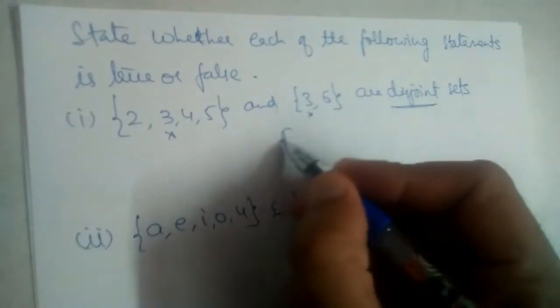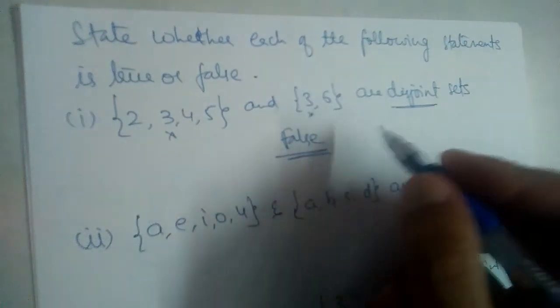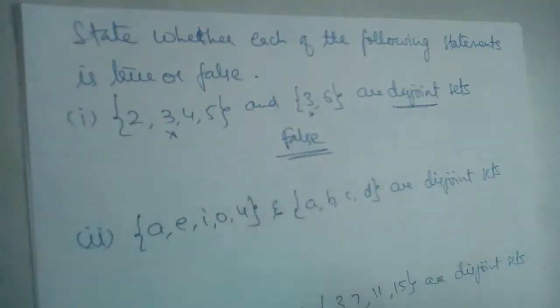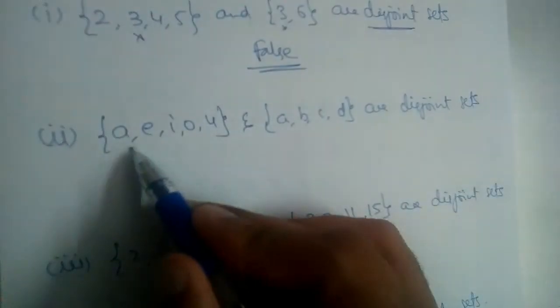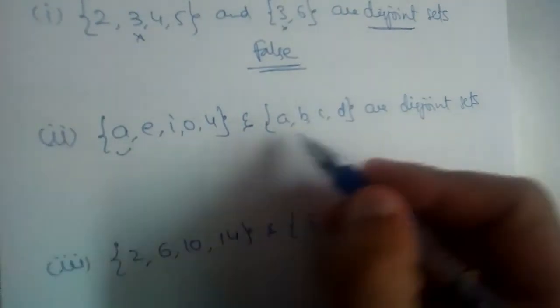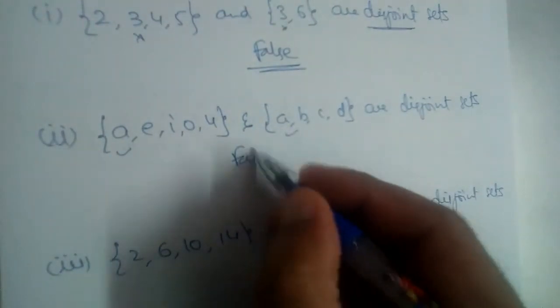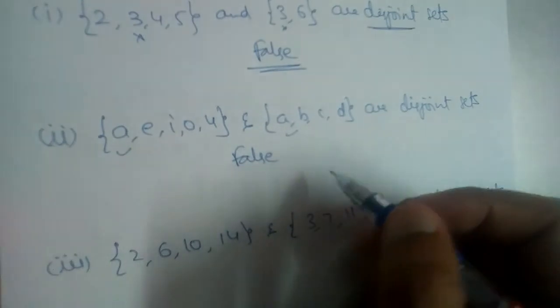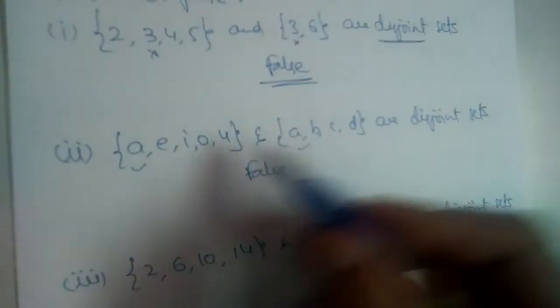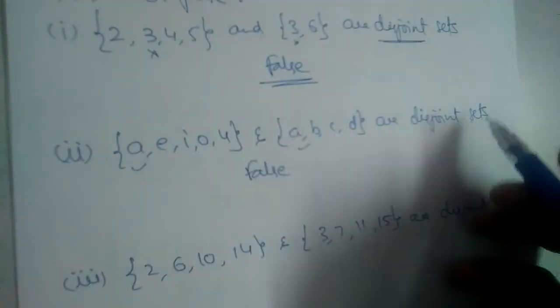So is it true? No, this is false. Okay, {a, e, i, o, u} and {a, b, c, d}—'a' is present in both the sets, hence this is also not a disjoint set. What is the statement? These two are disjoint sets. Is it true? No, this is false.